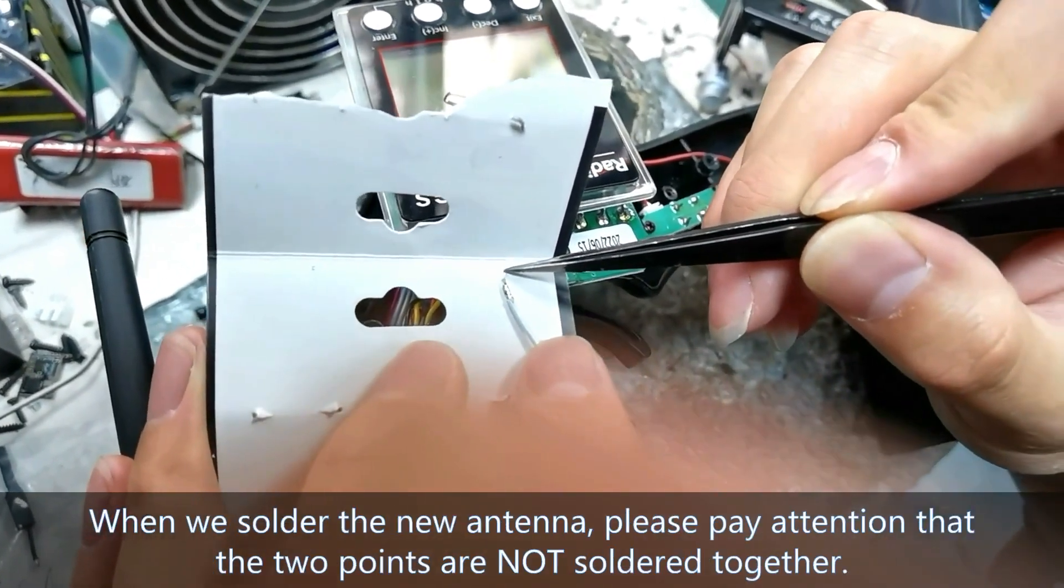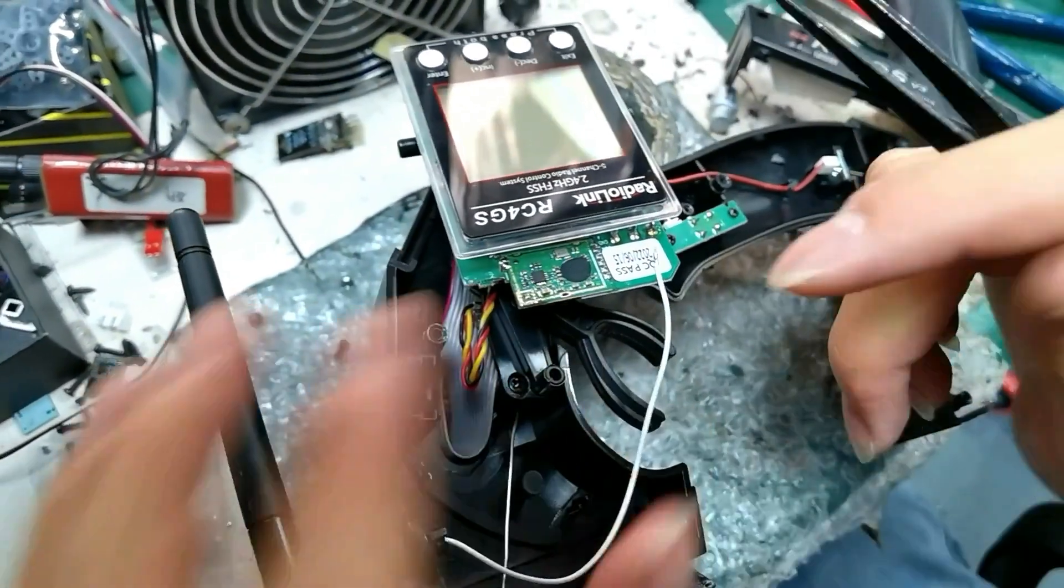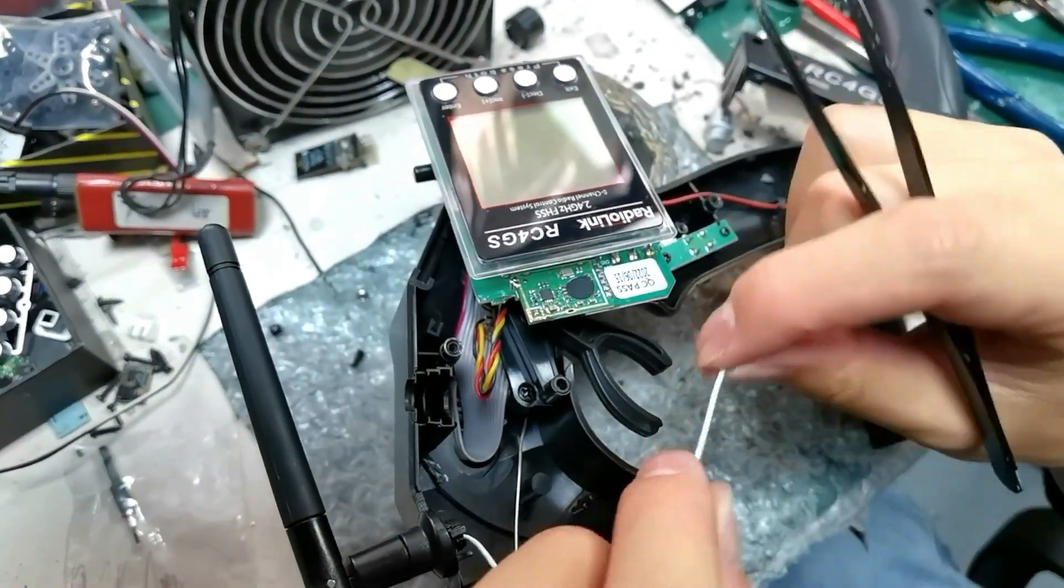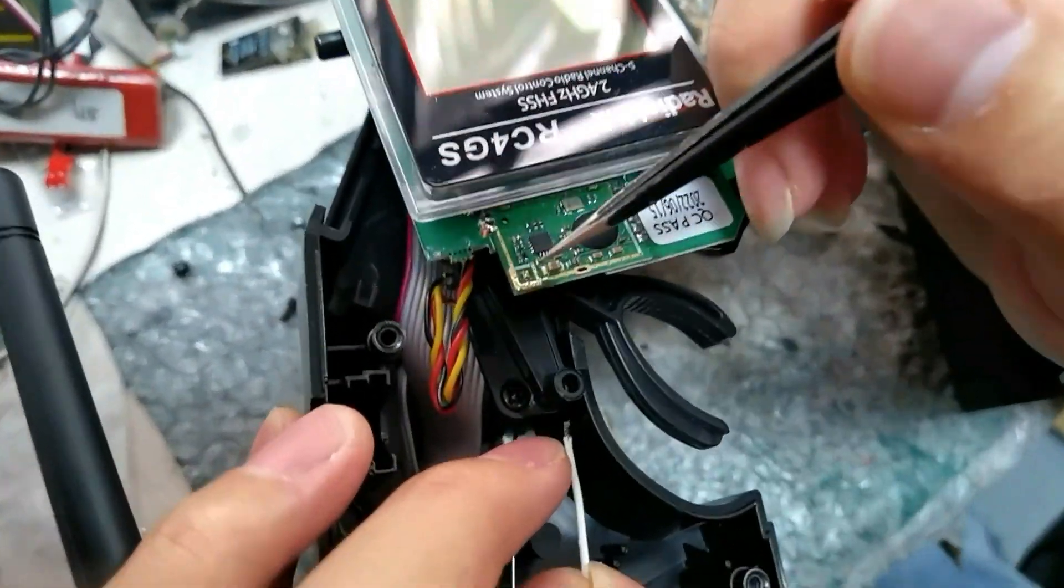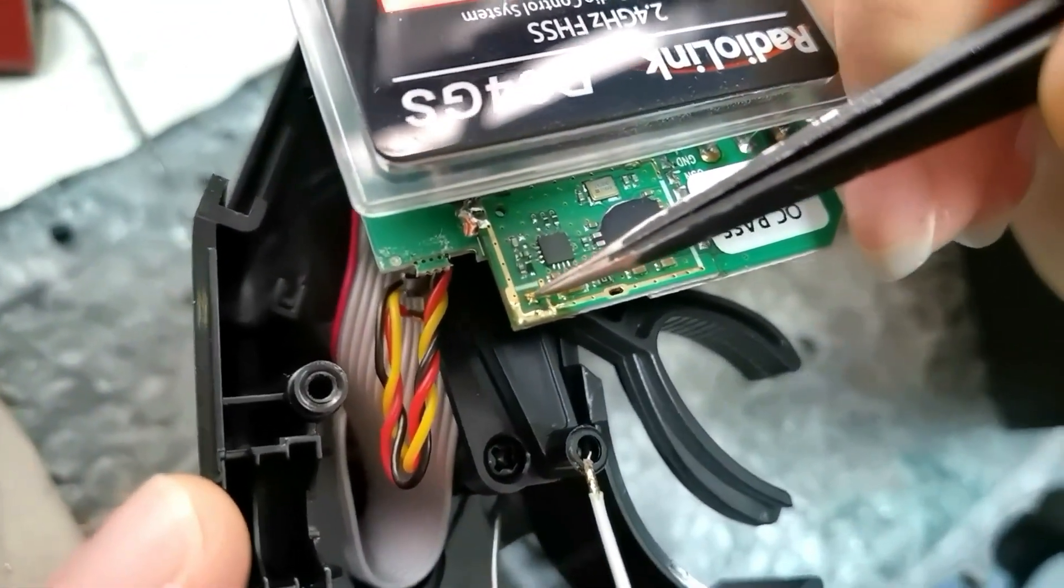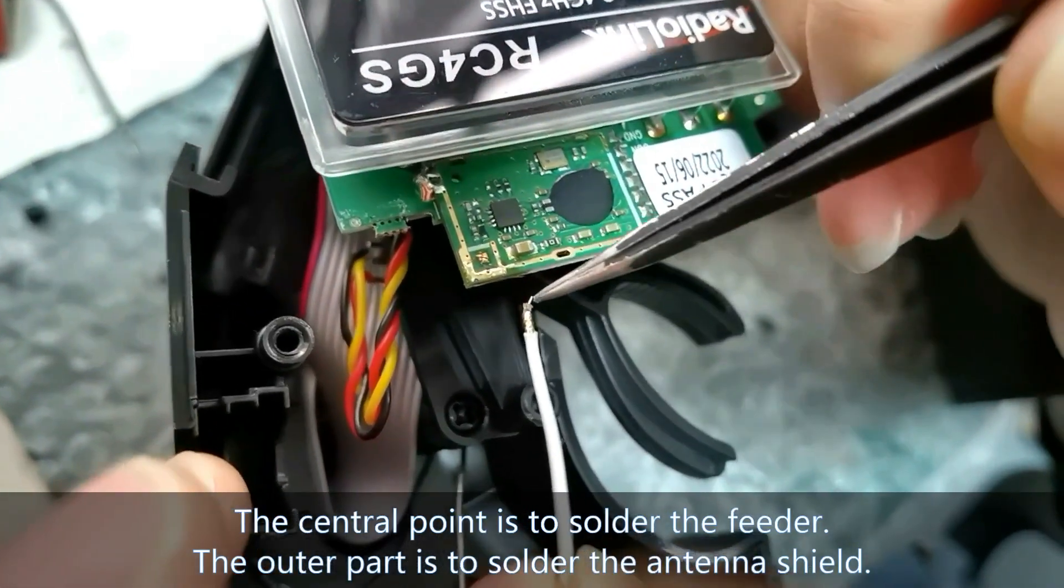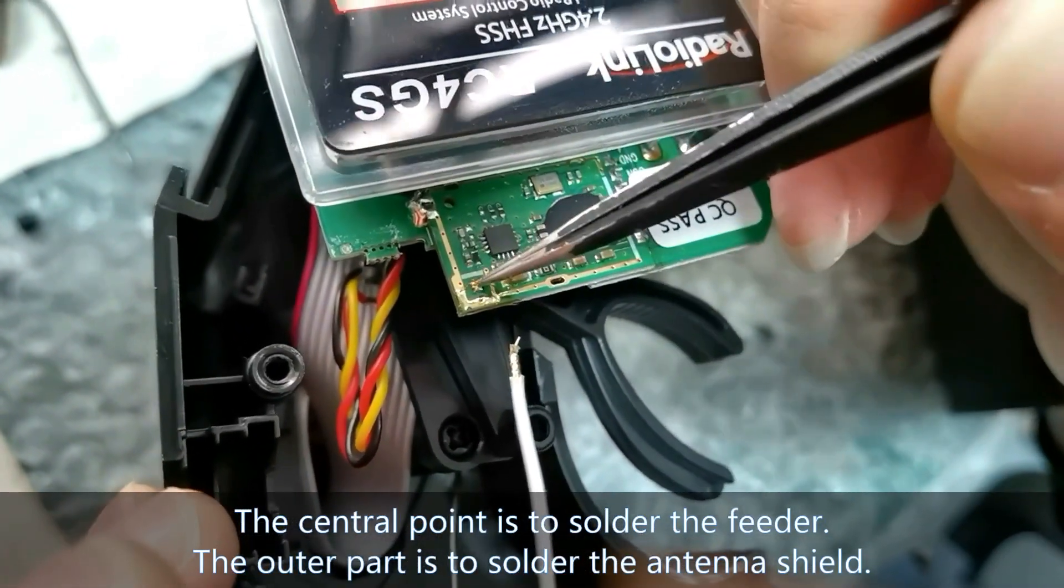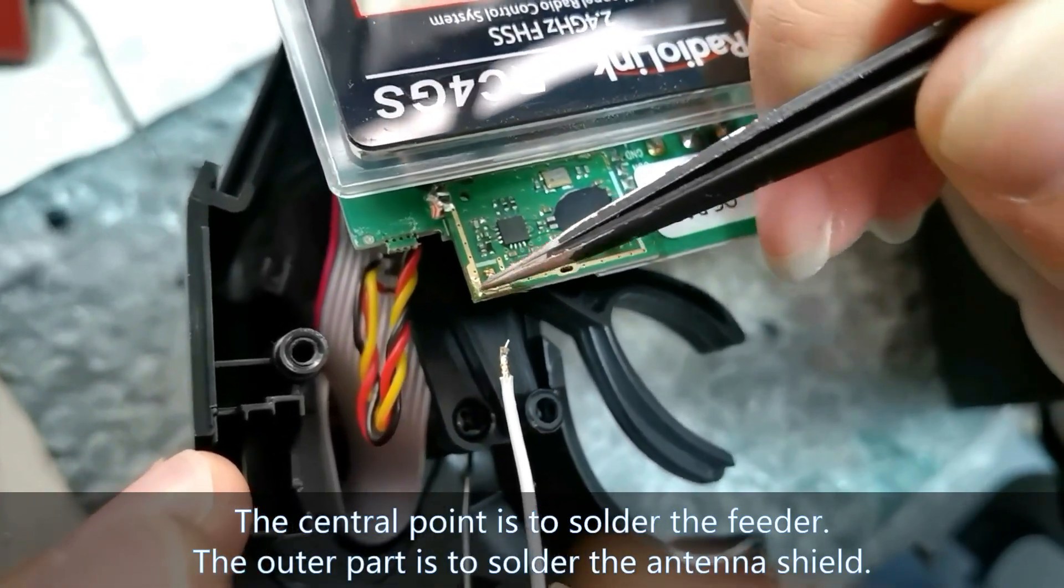We solder the new antenna. Please pay attention, there are two points, do not solder them together. Now solder the new antenna. The center point is to solder the feeder and the outer part is to solder the antenna shield.